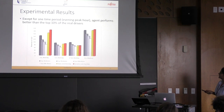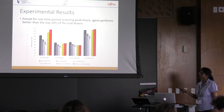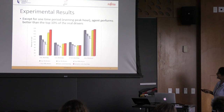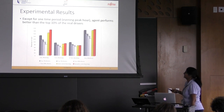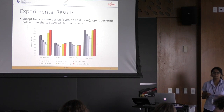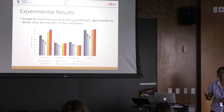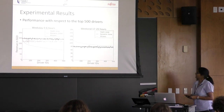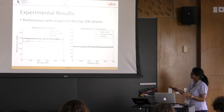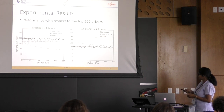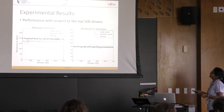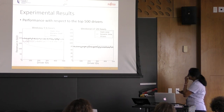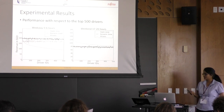We see that except for one time period, the agent performs better than the top 10% of real drivers. Specifically, during early hours when demand is very sparse, the agent performs better than the best driver. During peak hours, because demand is so high, whatever action you take you end up getting a passenger, so performance is not as great. Looking at the performance relative to the top 500 drivers for each time period, early morning performance is better than the best driver, while peak hour performance falls between the top 10% and top 20% of drivers.